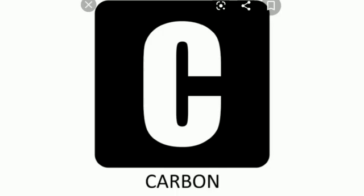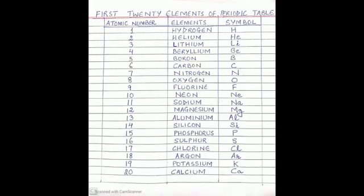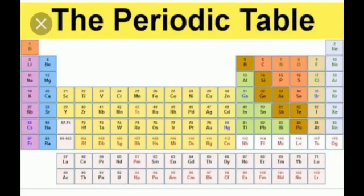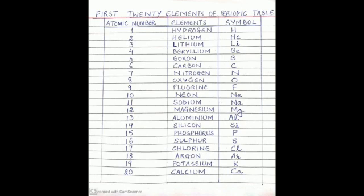Here we have the first 20 elements of the periodic table. The periodic table shows a systematic arrangement of all the elements in a tabular form. These 20 elements are arranged in proper order of their atomic number. You have to copy this list exactly in your notebook. Be very careful in writing the symbols — the first letter should be capital and the second letter should be small. For example, hydrogen is H, helium is He, and lithium is Li.